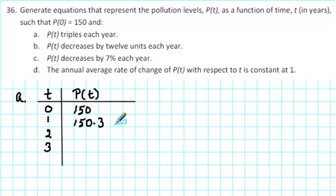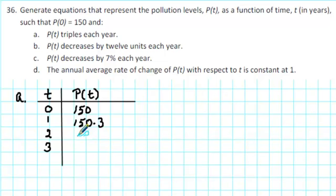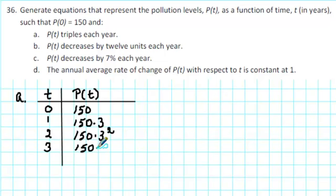We're thinking about the process so that we can look for a pattern to write an equation. How much will there be in the second year? We'll take the amount in the first year and triple that: 150 times 3, multiplied by 3, which gives 150 times 3 squared. Similarly, for t equals 3 we'll have 150 times 3 raised to the third power.